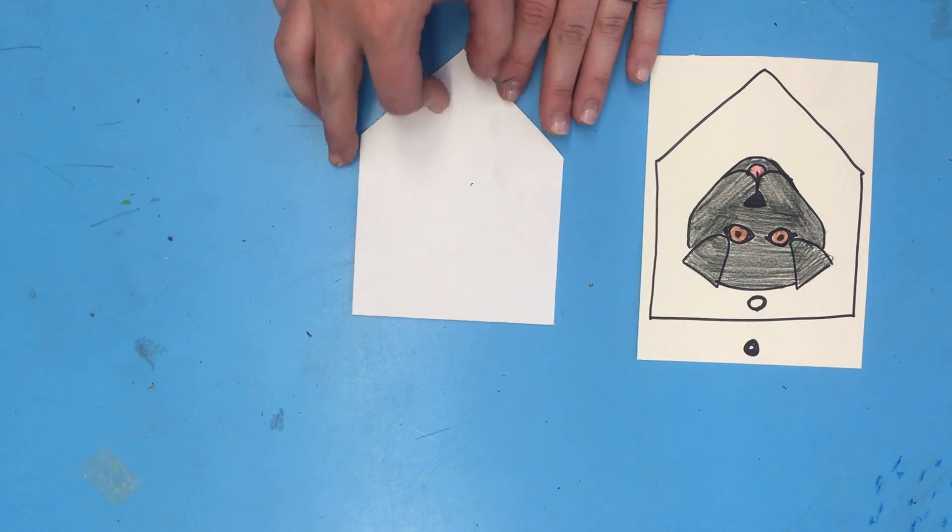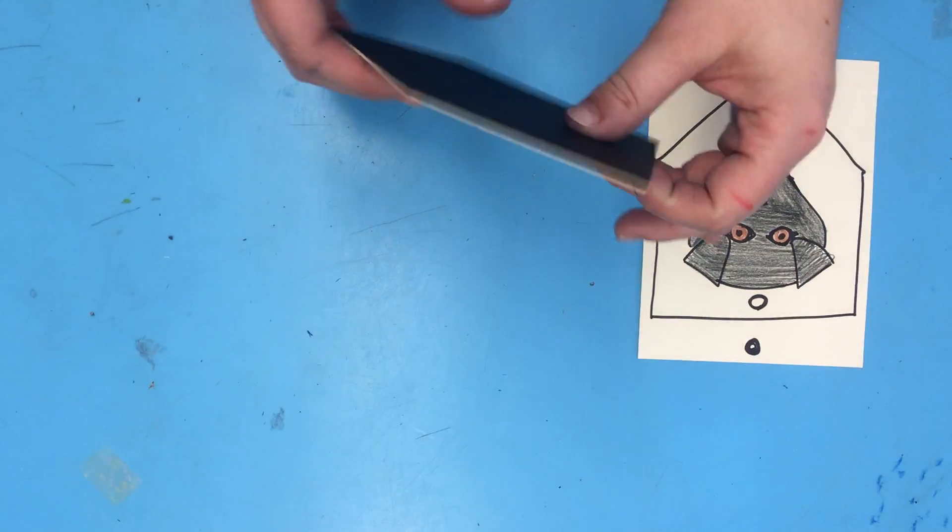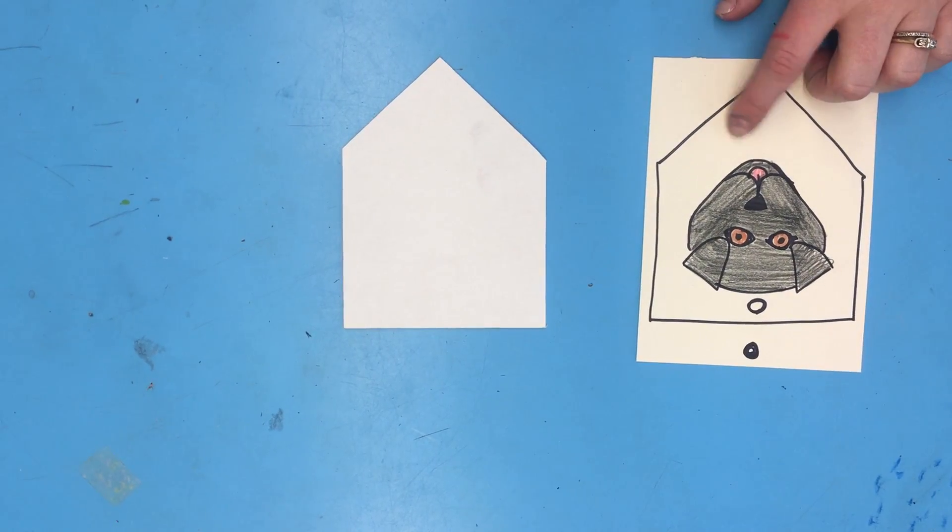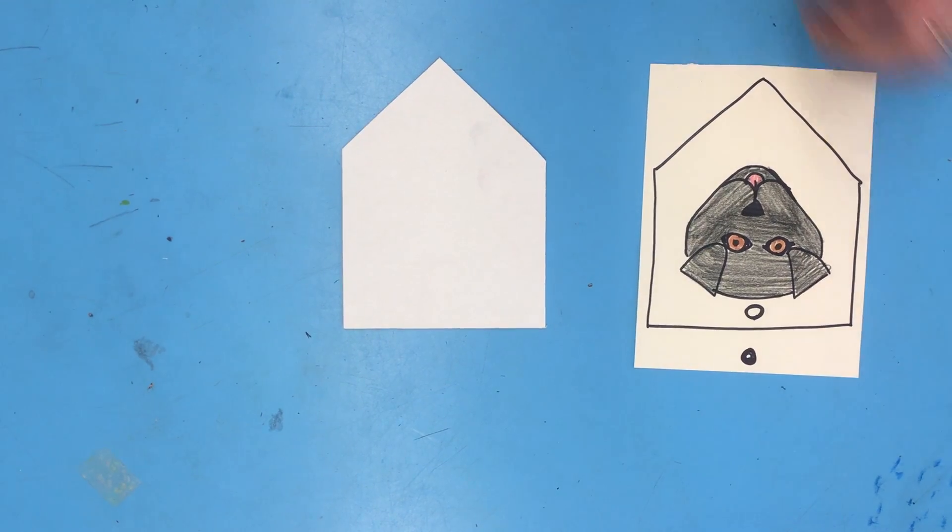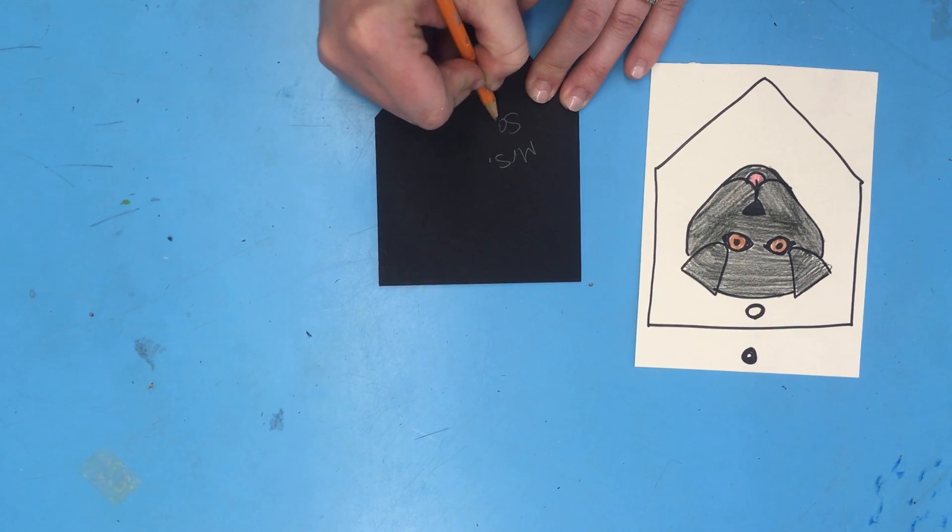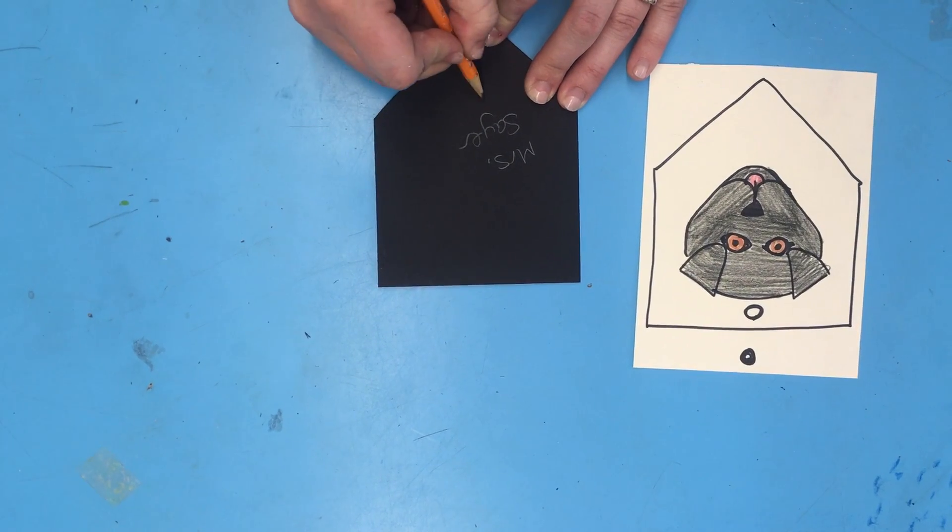And then you want to make sure you have your mat board. That's that hard piece of cardboard that I cut to the same size as your template. Before you start, you want to make sure that you have your name on the back and your class.